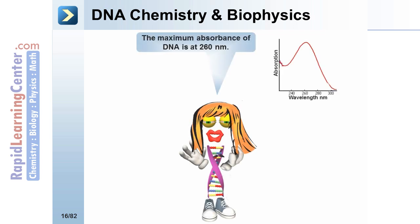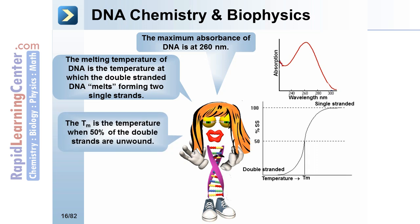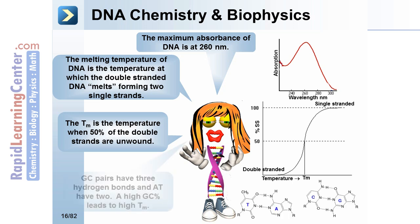DNA chemistry and biophysics. The maximum absorbance of DNA is at 260 nanometers, as shown on a graph of absorption versus wavelength. The melting temperature of DNA is the temperature at which double-stranded DNA melts to form two single strands; TM is the temperature when 50% of the double strands are unwound. GC pairs have three hydrogen bonds and AT pairs have two, so a high GC percentage leads to a high TM.